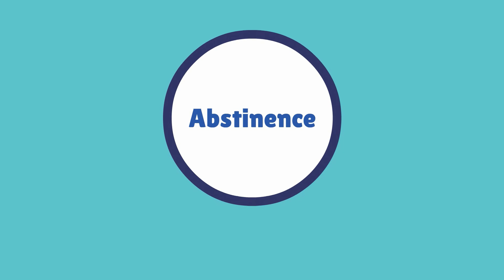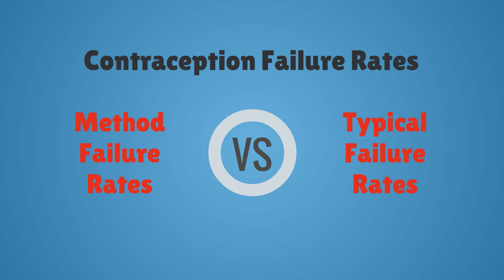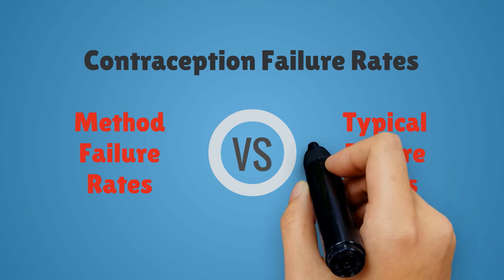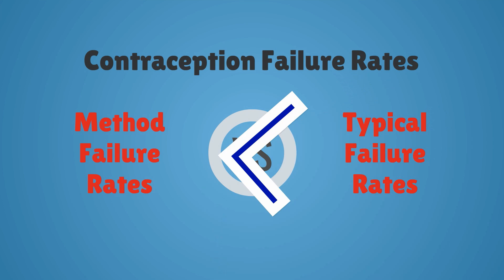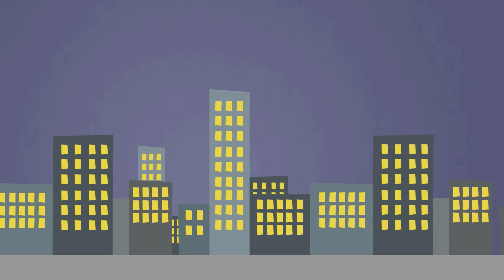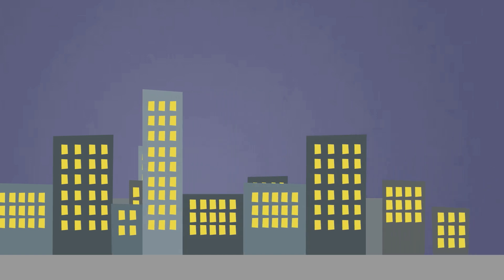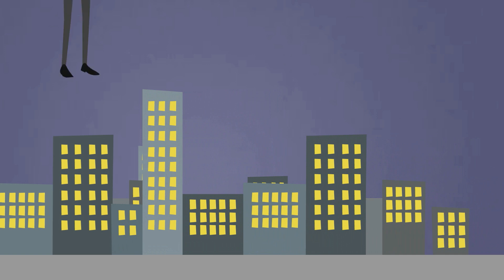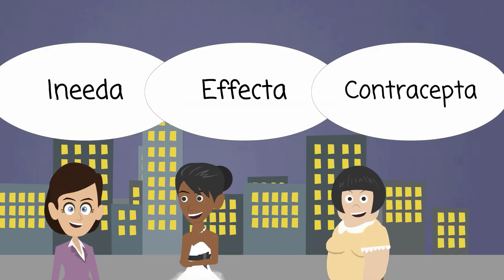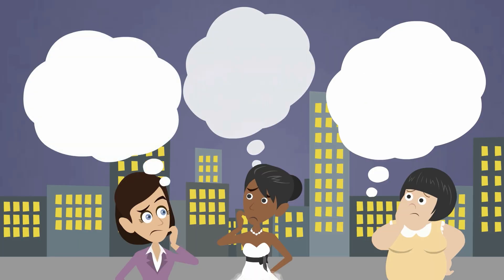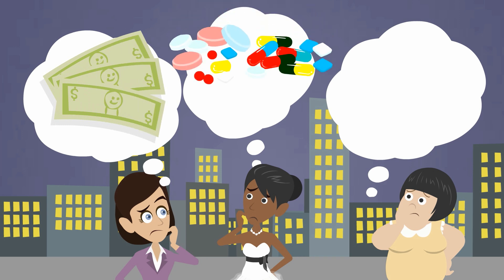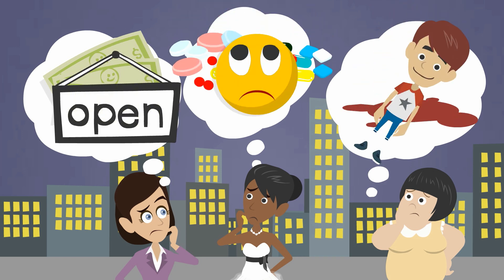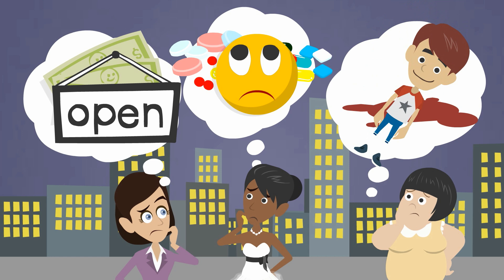The only 100% effective form of contraception is abstinence. All other methods have varying levels of efficacy. An important concept is the difference between method failure rate and typical failure rate. Method failure rate refers to the inherent chance of failure when the method is used correctly 100% of the time. Typical failure rate, often higher, refers to the failure rate when a method is used by actual women, factoring in human error and compliance. The decision regarding which contraception to use will include many factors beyond just efficacy — such as cost, medical history, typical bleeding pattern, availability, side effects, and partner participation. We need to balance both the psychosocial and medical components when deciding upon a contraception plan.